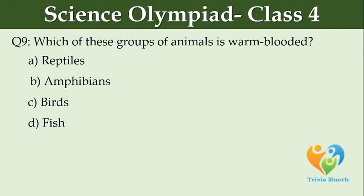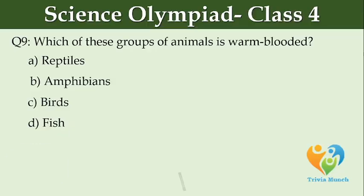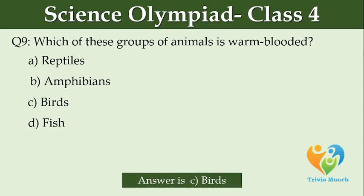Which of these groups of animals is warm-blooded? Option A: Reptiles, Option B: Amphibians, Option C: Birds, Option D: Fish.